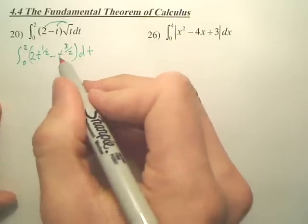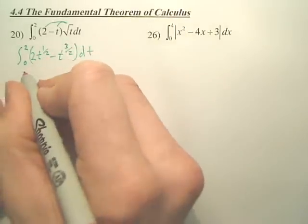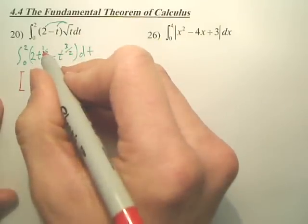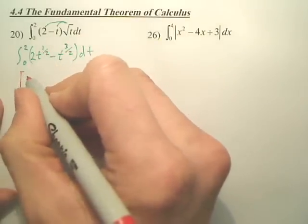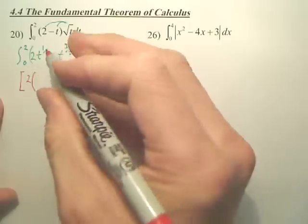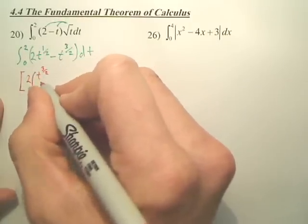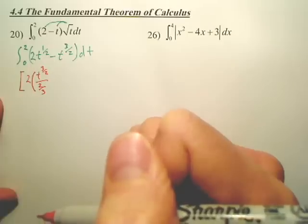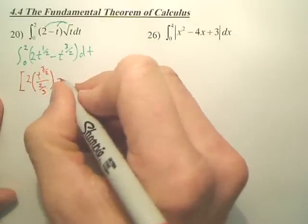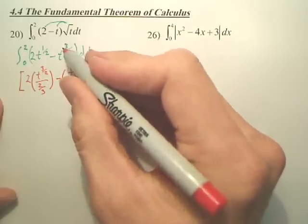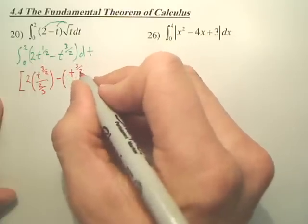Next, we integrate each piece individually. Once you integrate, you put brackets. So you add 1 to 1 half and you get 3 halves. So you got t to the 3 halves divided by 3 halves minus, add 1 to this, you get 5 over 2.